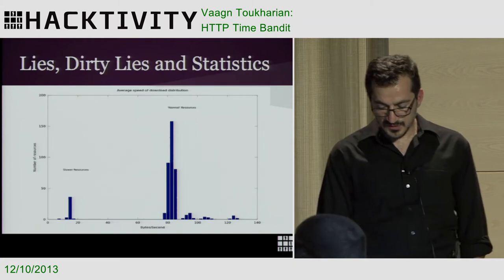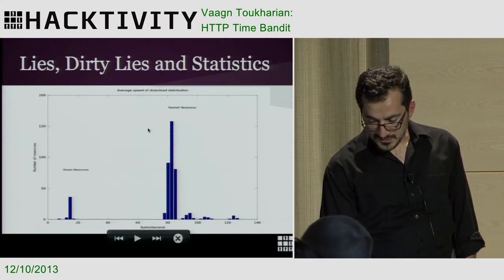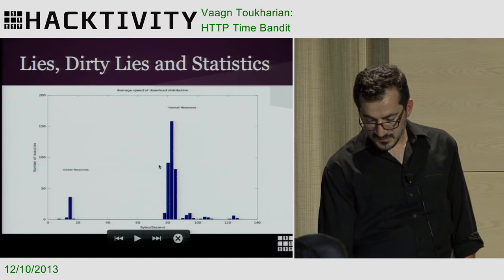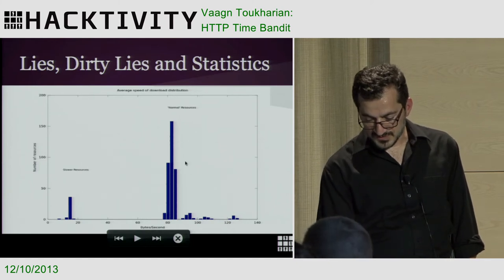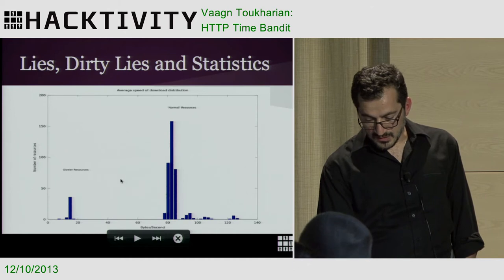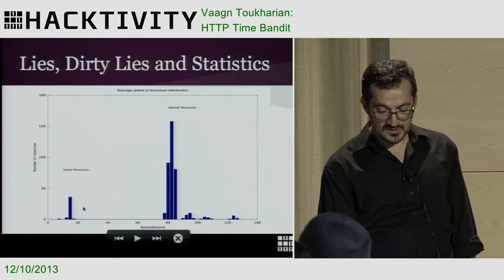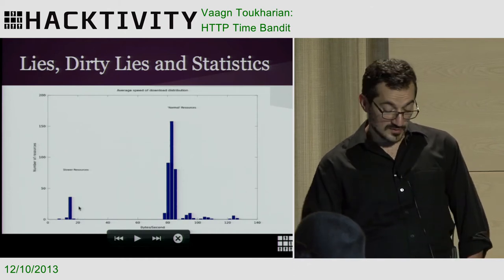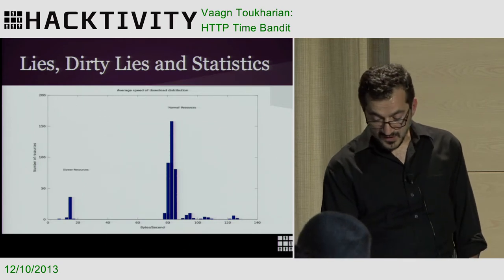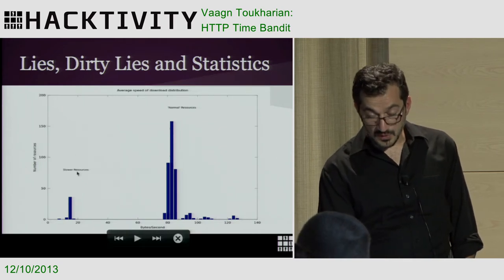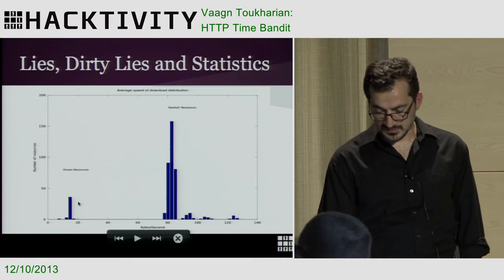On this slide we see the distribution of normal resources for an average website. Some slower resources drop into a totally different cluster. Our goal is to find this slow cluster and push those resources as much as possible.